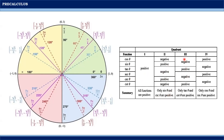If the angle lies in the third quadrant where both x and y coordinates are negative, then cosine is negative and sine is also negative. Tangent, which equals y/x, gives negative divided by negative, so it becomes positive. Cotangent will also be positive. Secant (equal to 1/x) and cosecant (equal to 1/y) will both be negative.